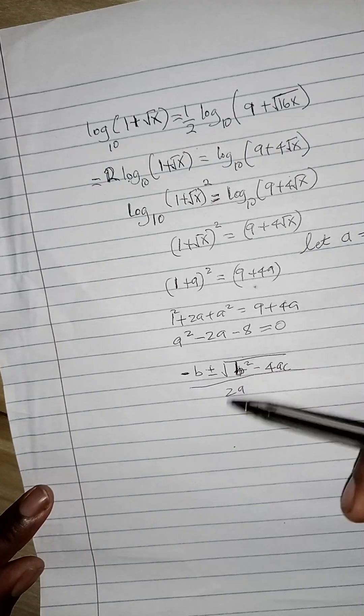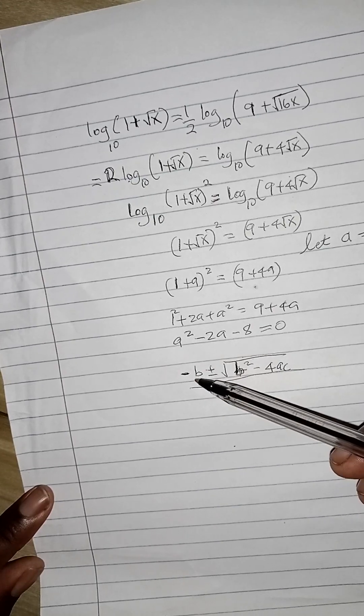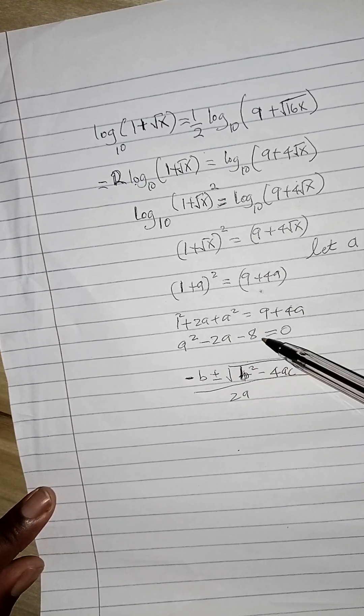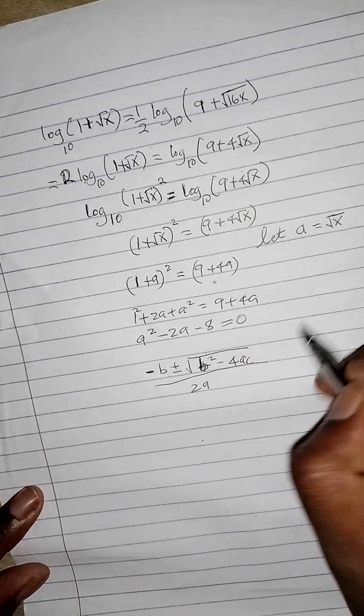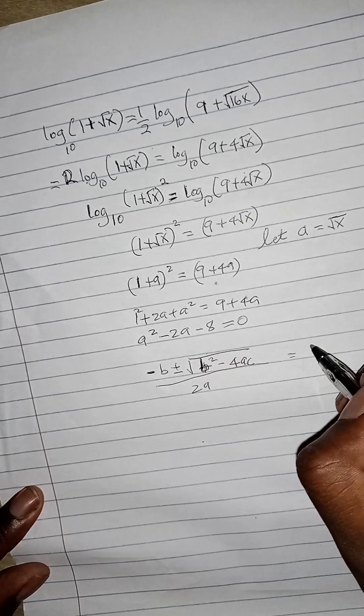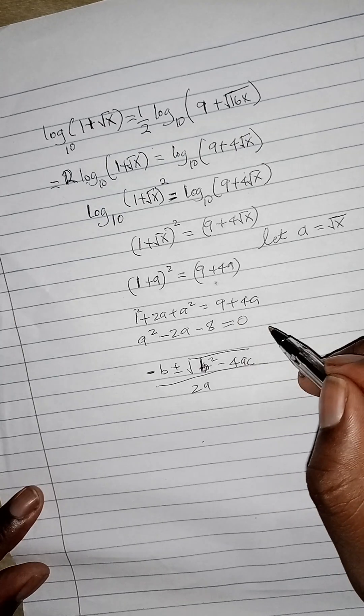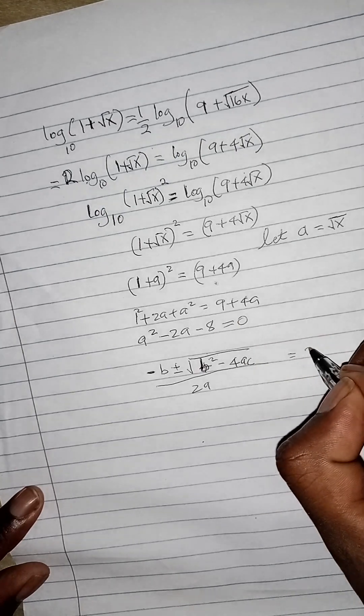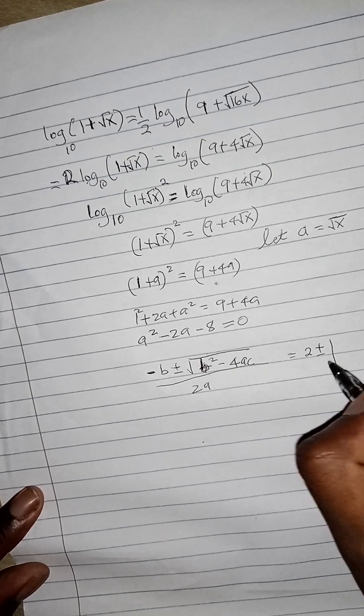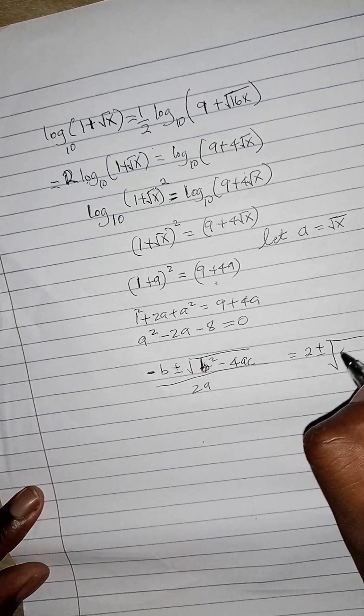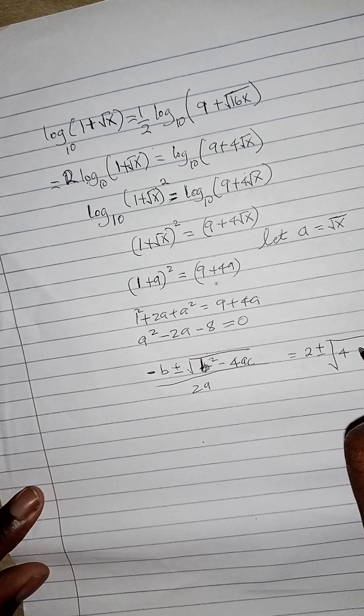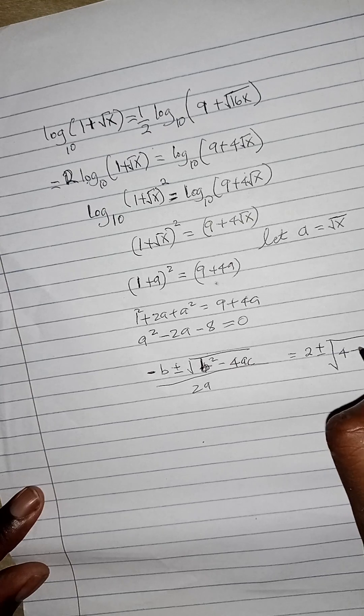Now the value of our b is negative 2, our a is 1, our c is minus 8. So if you substitute the values, you are going to get something like minus minus b, that you get 2 plus or minus into bracket b squared, that is minus 2 squared, that is 4 minus 4ac. 4ac is negative 32, so it's going to be positive.